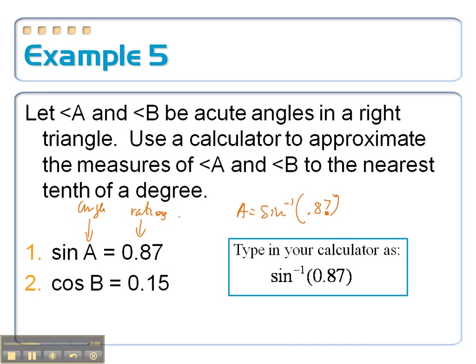which is second sine, 0.87, and we get approximately 60.5 degrees, just rounded to the nearest tenth. For the second one down here,